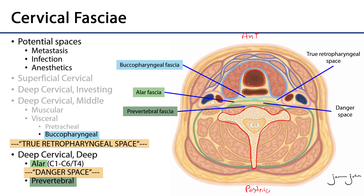There's our trachea, there is our esophagus, and we can see the thyroid gland wrapped about there. Here are some of those infrahyoid muscles, there's SCM on either side, then there's trapezius, and then wrapping around here are the carotid sheaths.